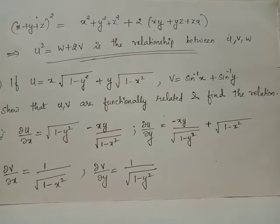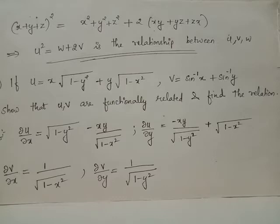If u and V are functionally related, then we will have the Jacobian ∂(u,v)/∂(x,y) equals 0. The required Jacobian will have a first row consisting of first-order partial derivatives of u with respect to x and y, and a second row of first-order partial derivatives of V with respect to x and y.